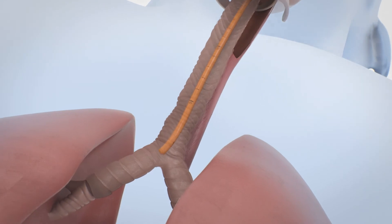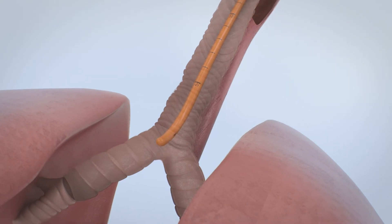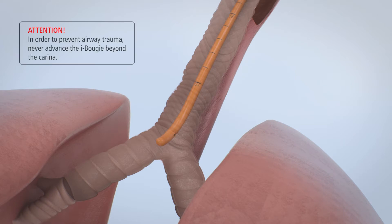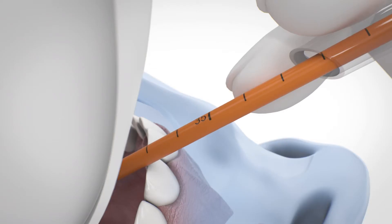If a holdup is felt at the 30-35 cm marking, then the tip of the EyeBougie reached the carina. Attention! In order to prevent airway trauma, never advance the EyeBougie beyond the carina. In this case, withdraw the EyeBougie to the 25 cm marking.